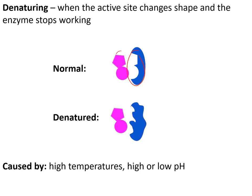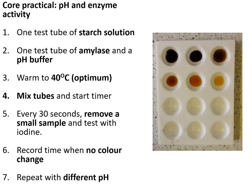Enzymes can be denatured. Normally the active site has the matching shape for the substrate, but sometimes the active site changes shape so it no longer fits the substrate, stopping the enzyme from working. This can be caused by high temperatures and very high or very low pH.